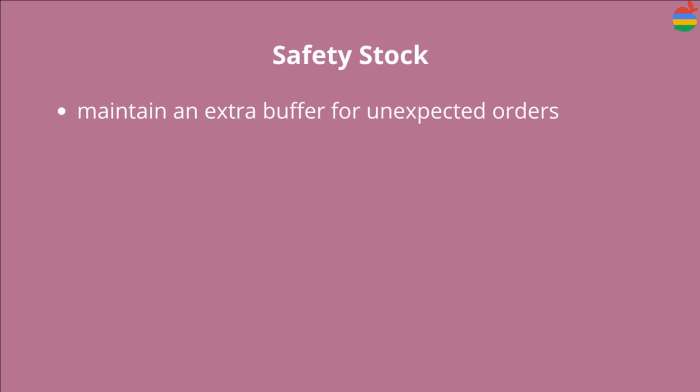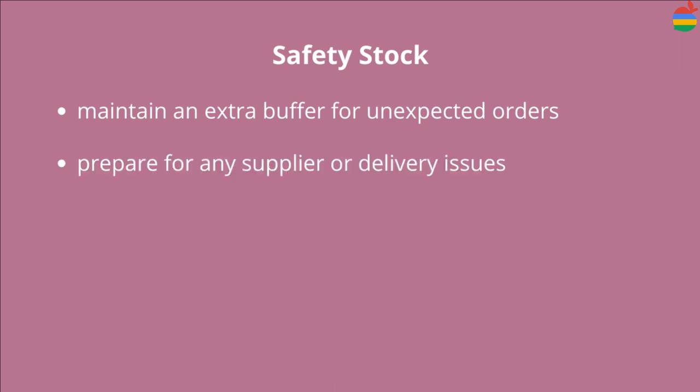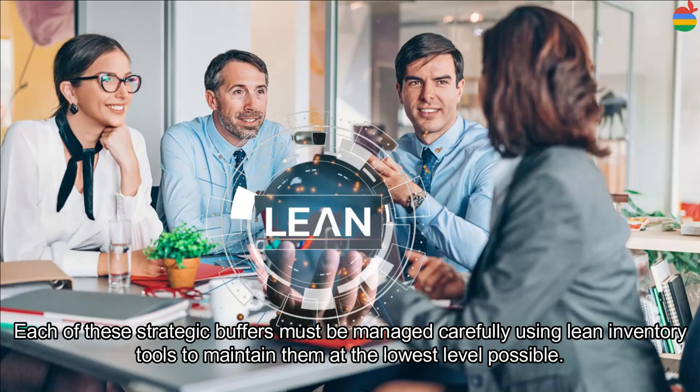A third type of buffer is safety stock, which you might call 'just in case' inventory. You want to maintain an extra buffer of finished goods in case customer orders increase unexpectedly. You also want to maintain a little extra inventory of materials and supplies in case there is a problem with your suppliers or the delivery service.